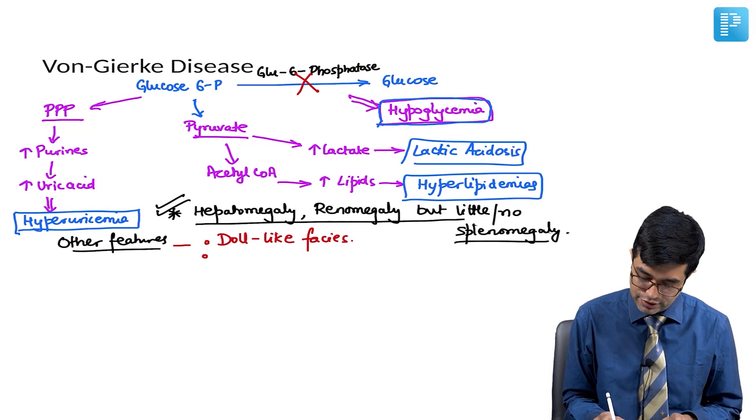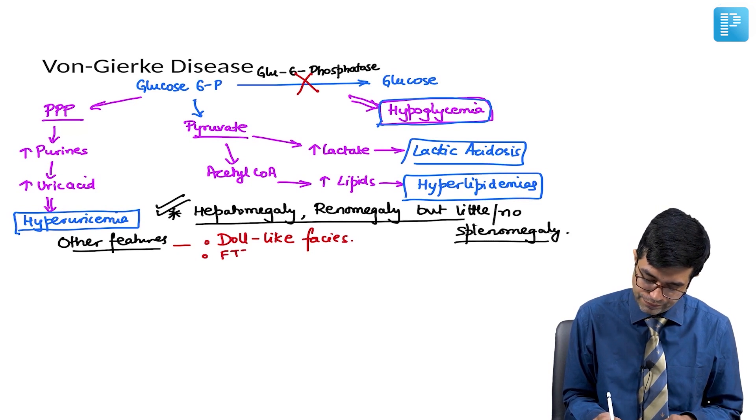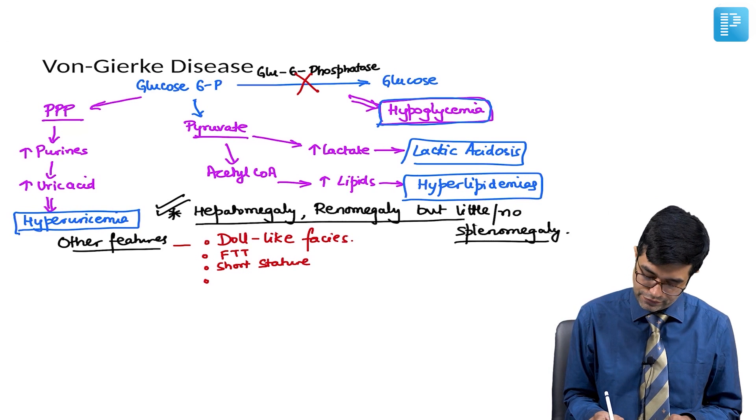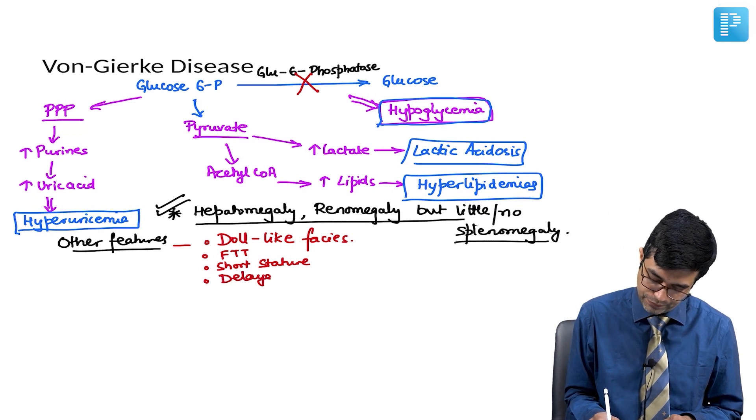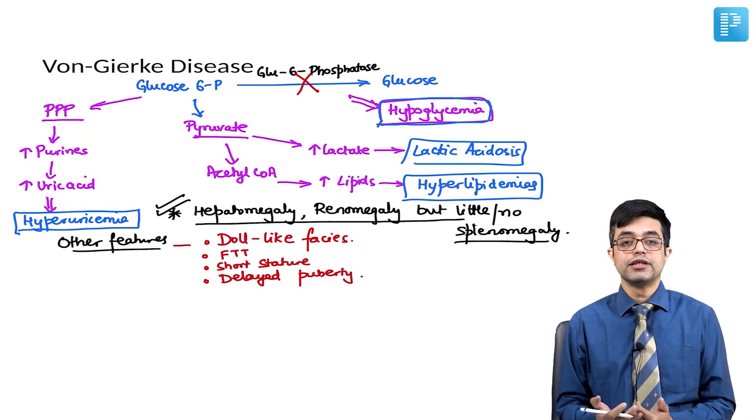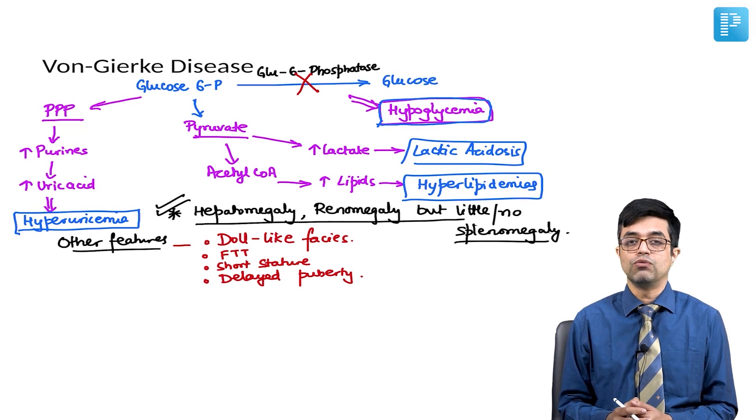Second thing, you will find that these children have failure to thrive. Third, they will have a short stature, and fourth, they will have delayed puberty once the pubertal age comes. So, these are the various manifestations which occur in Von-Gierke disease.